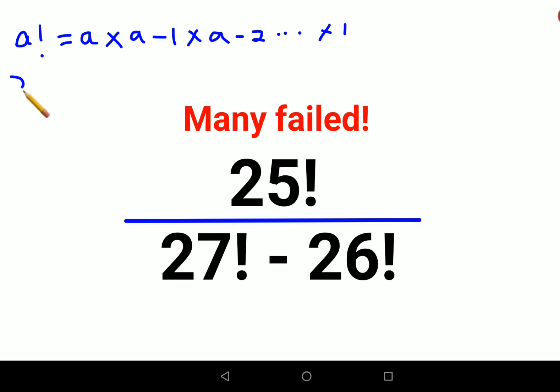Similarly, your 27 factorial can be written as 27 × 26 × going on up to 1. Similarly, 26 factorial can be written as 26 × 25 × going on up to 1.